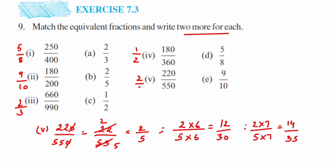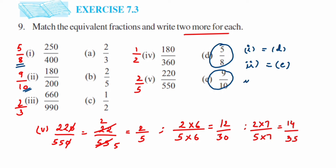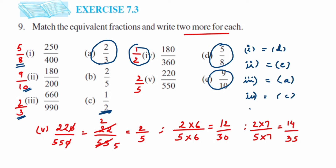Now I'm going to do the matching. The first fraction reduced to 5/8, which matches option d. The second reduced to 9/10, which matches option e. The third reduced to 2/3, which matches option a. The fourth reduced to 1/2, which matches option c. The last one remaining is b, so the fifth matches b.